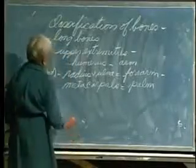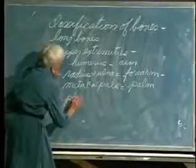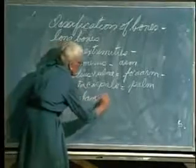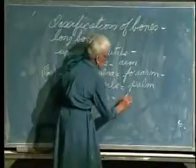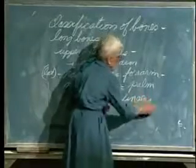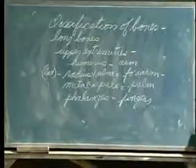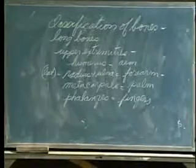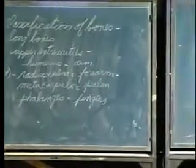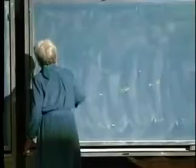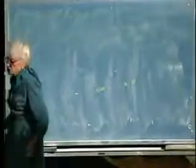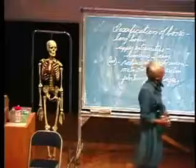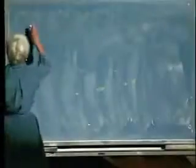And then the phalanges - the phalanges are the fingers. Let's go on down to the lower extremity. Having things broken down this way allows you to be very specific when you're talking. When you go to your doctor, you can say it hurts over here by my radius.